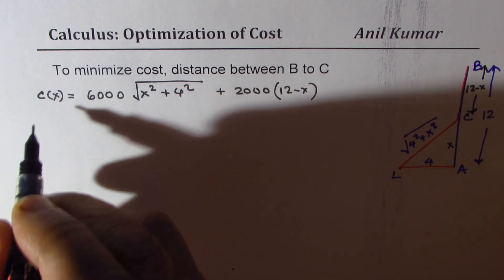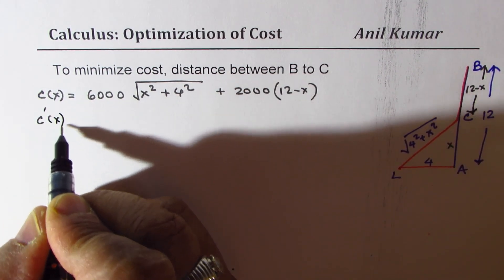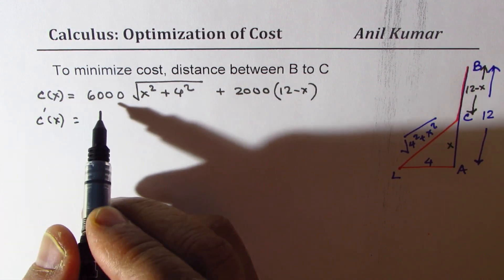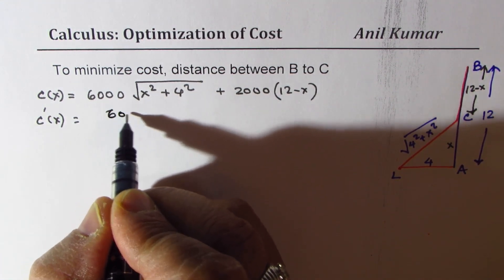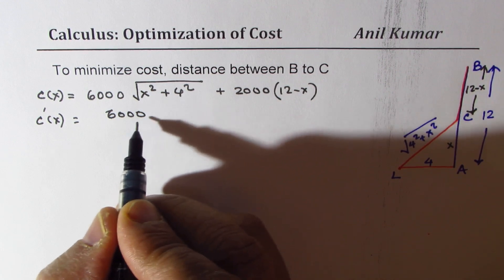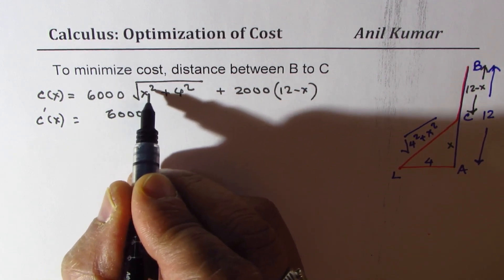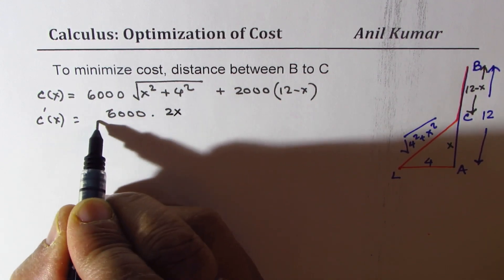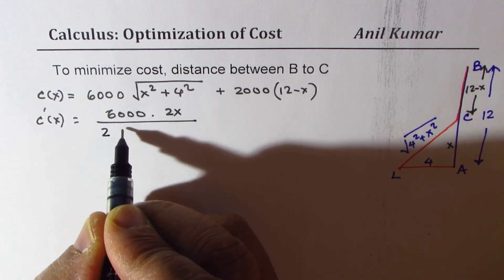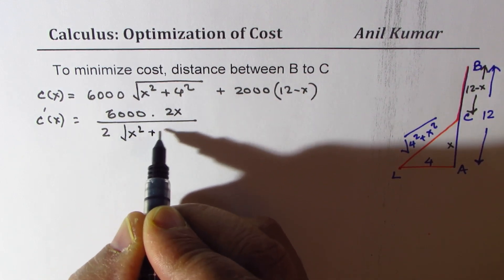The derivative for this particular function is, as we just saw, 6,000, and we had times 2x, derivative of this, divided by, actually it is 2, square root of x square plus 4 square.